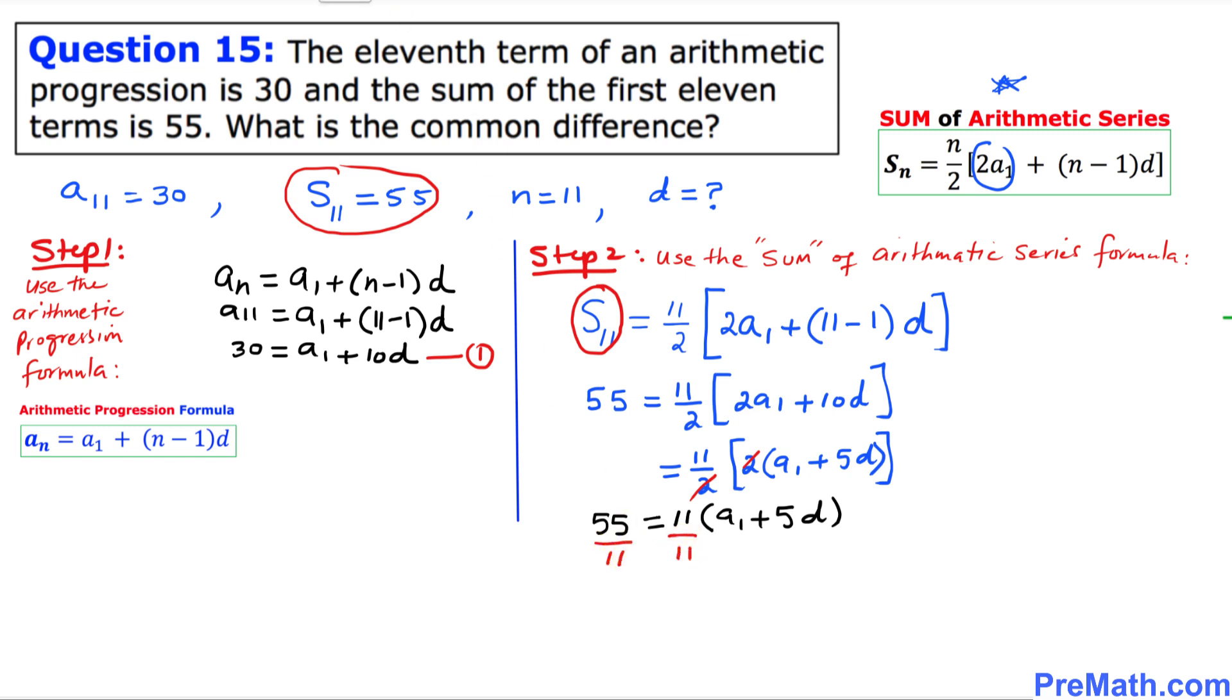So that means we are going to have 5 equals A1 plus 5D. That is equation number 2.